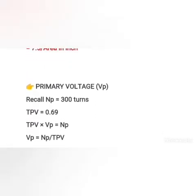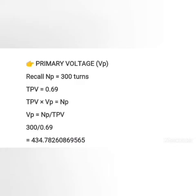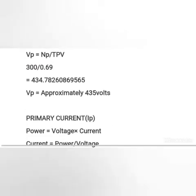Next we find the primary voltage. We recall that at our primary windings the number of turns is 300, and our turns per volt is 0.69. Since turns per volt times primary voltage gives the total number of turns for that winding, the primary voltage equals number of turns in the primary divided by turns per volt — that is 300 divided by 0.69 — giving us approximately 435 volts.